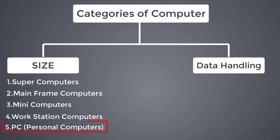The next category is the Personal Computer, or PC. It is a common computer designed for one user with one CPU. It is typically used for personal work, watching videos, or gaming. Examples include laptops and tablets.